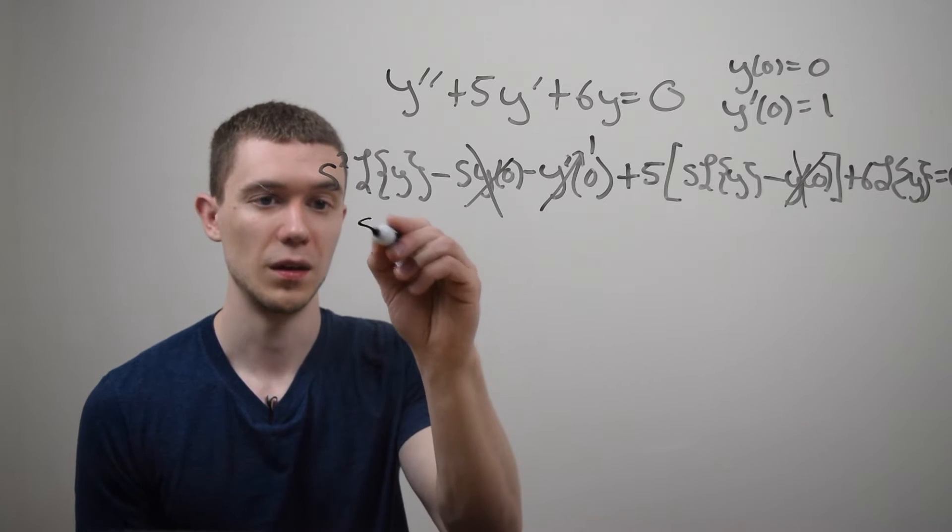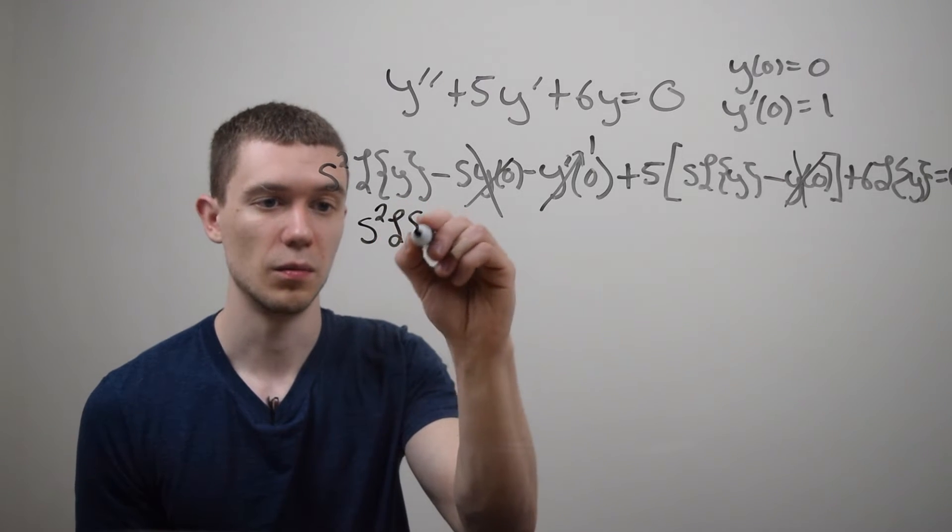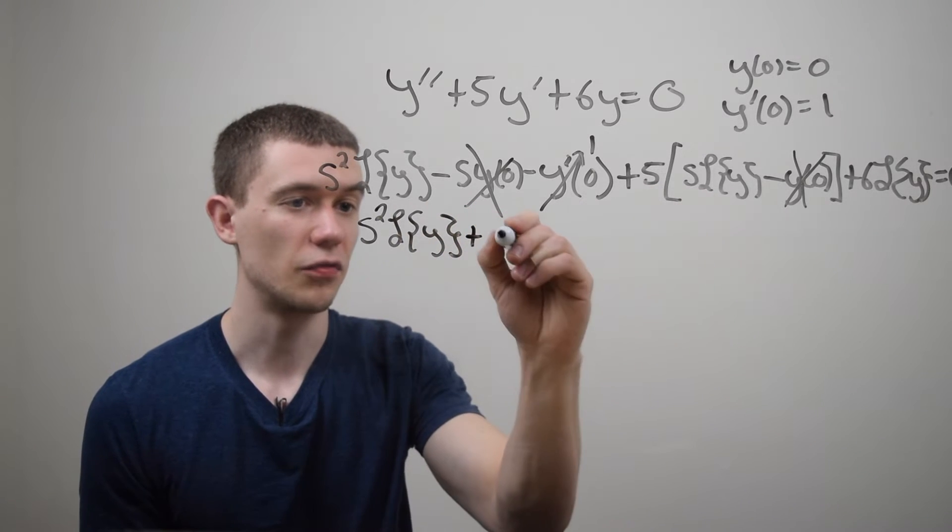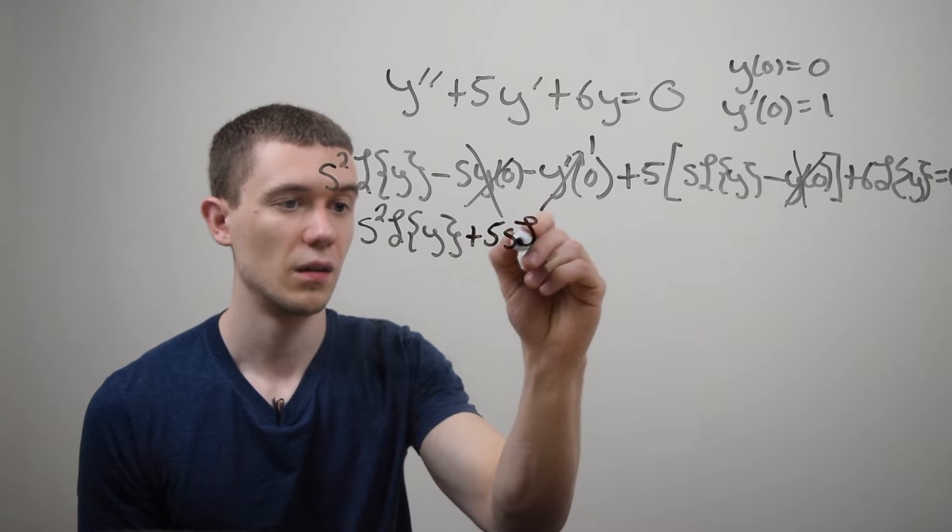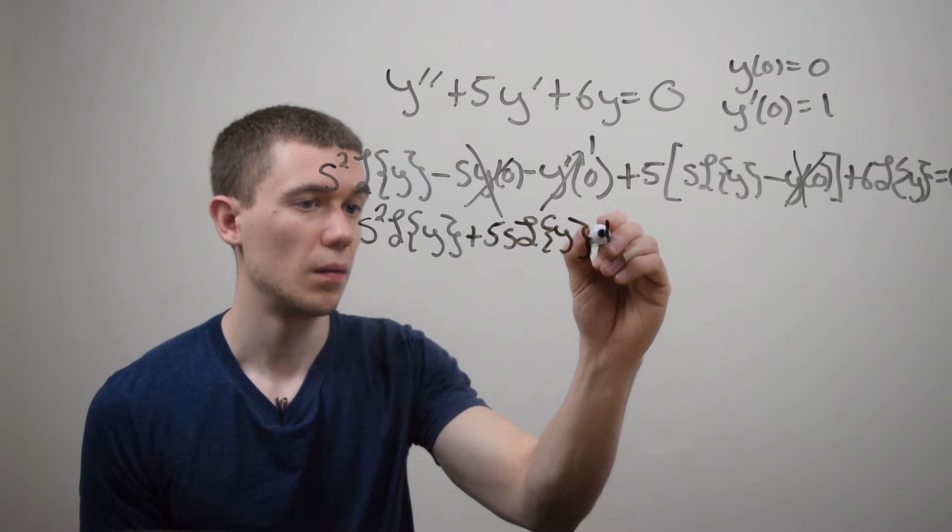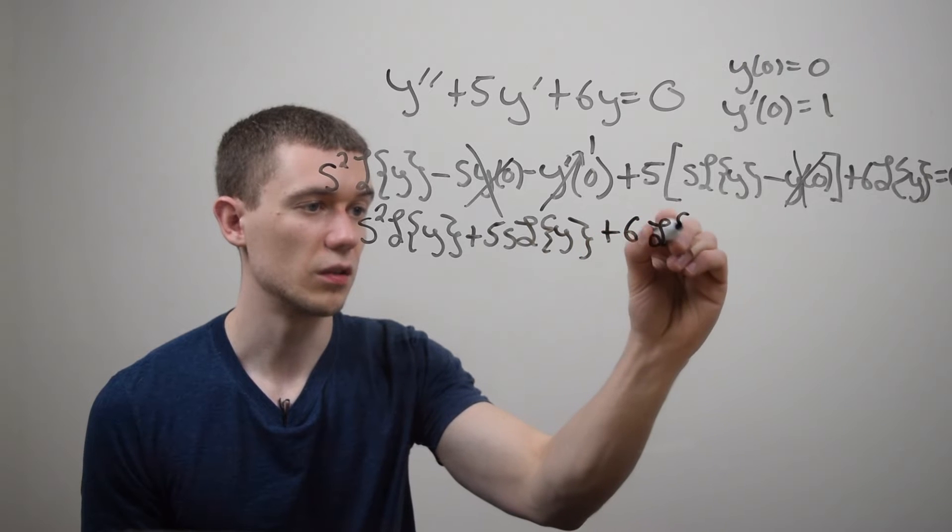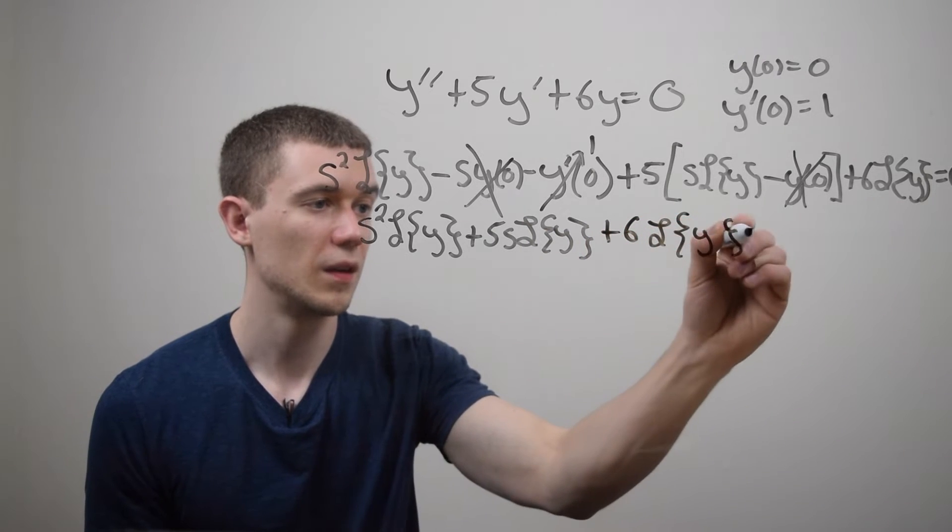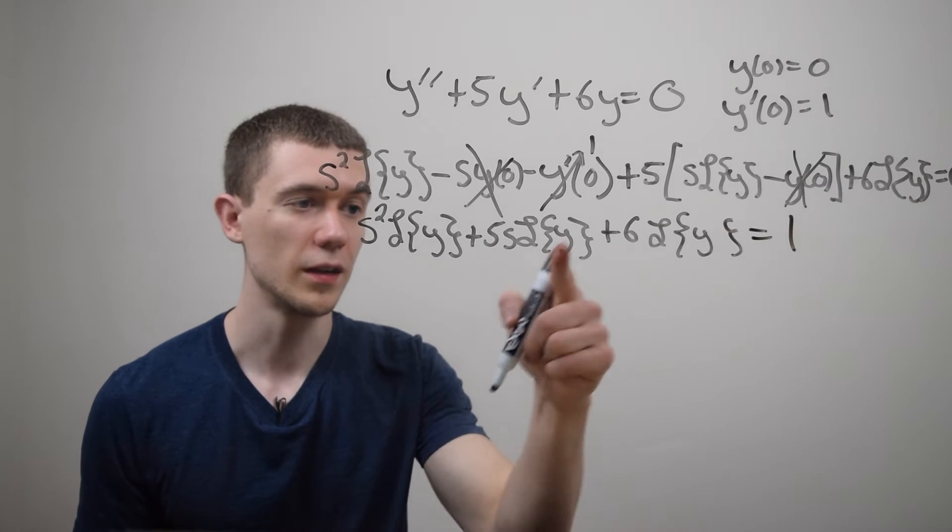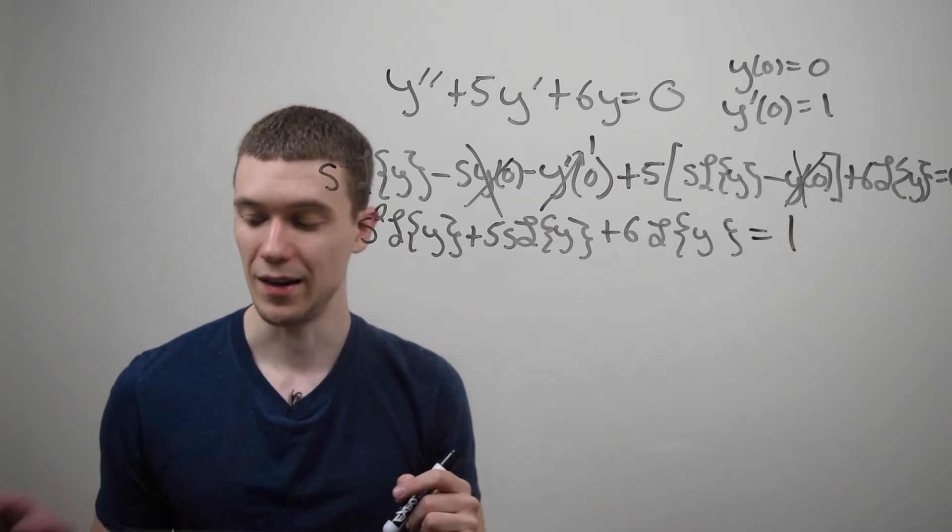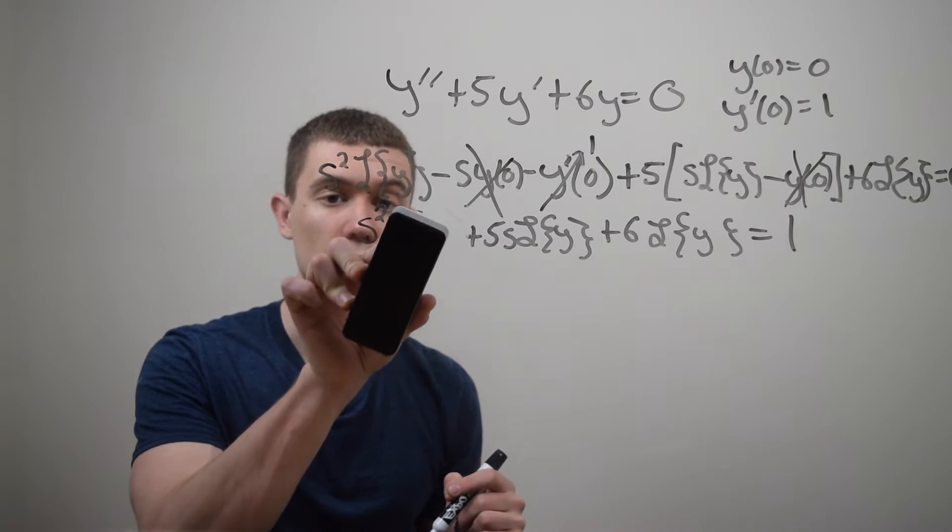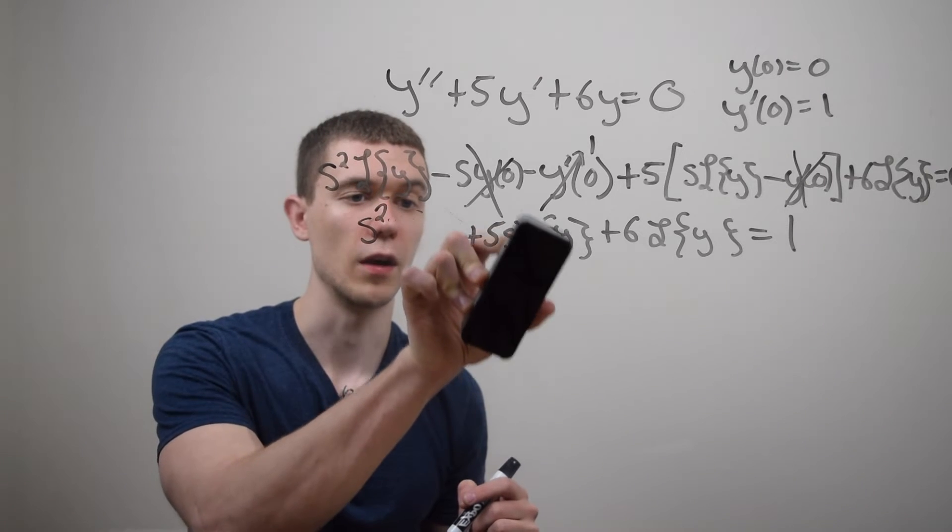So this is going to give me s squared times the Laplace of y plus I would have plus five s Laplace transform of y plus six Laplace transform of y is equal to one. Now, if you notice, there's a Laplace transform of y in every single term on the left, it's a factor of every term on the left, which means I can factor it out.